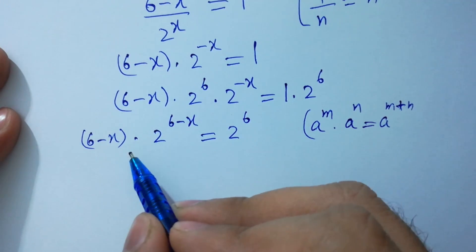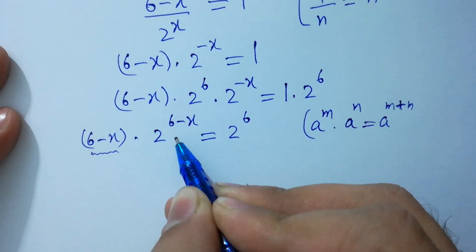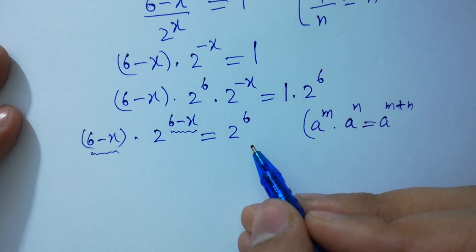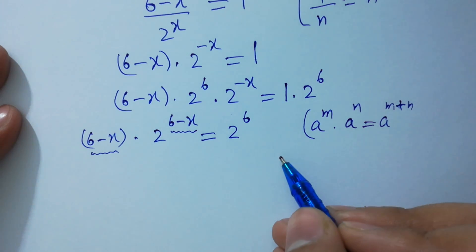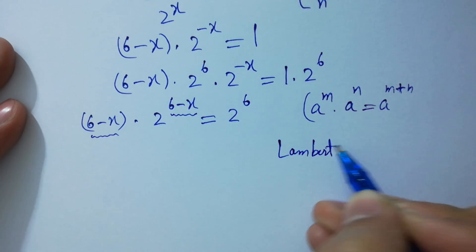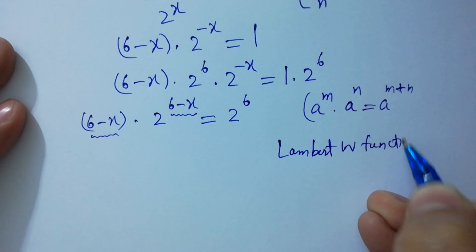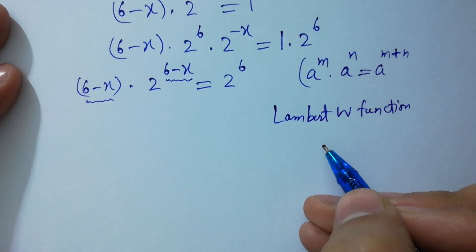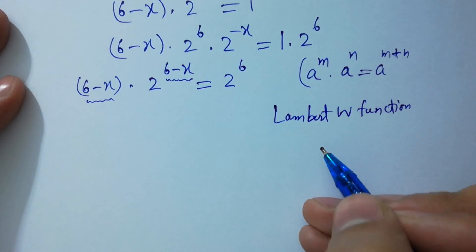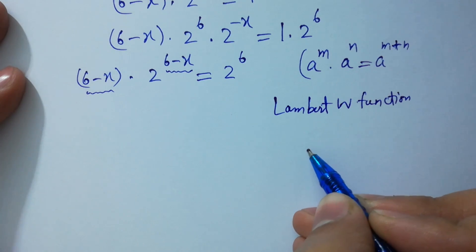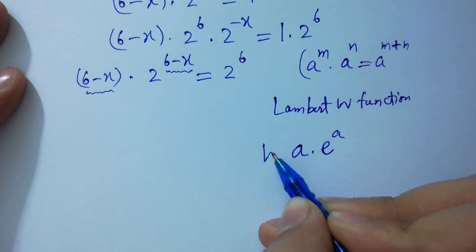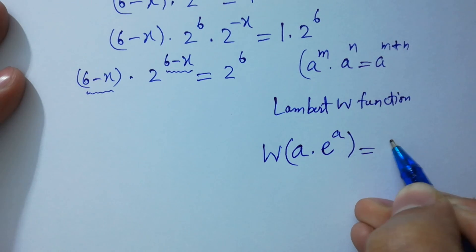Now you can see that (6 minus x) and the power (6 minus x) are the same. So I can use the Lambert W function here. Do you know about the Lambert W function? It's very easy to understand. If we have an expression a times e to the power a and apply the Lambert W function, it will equal a.